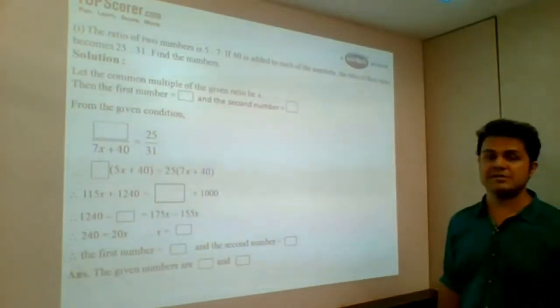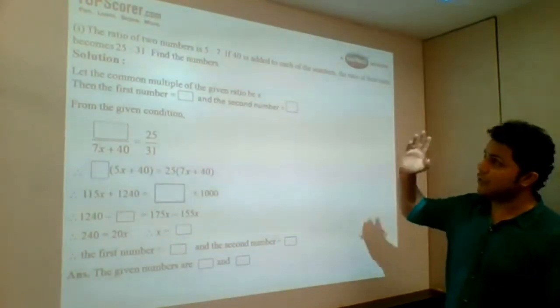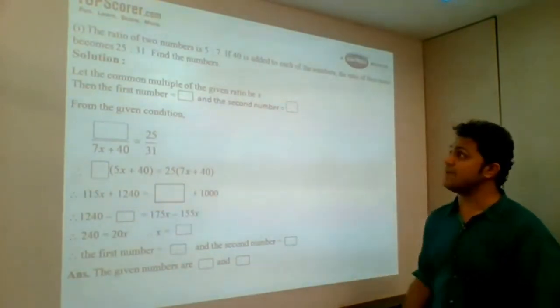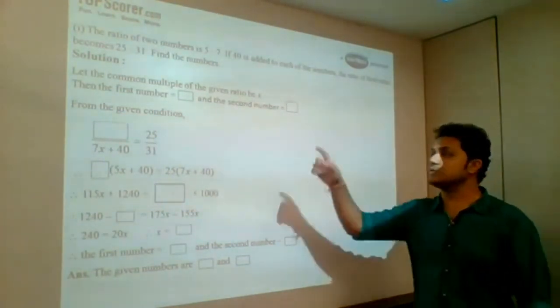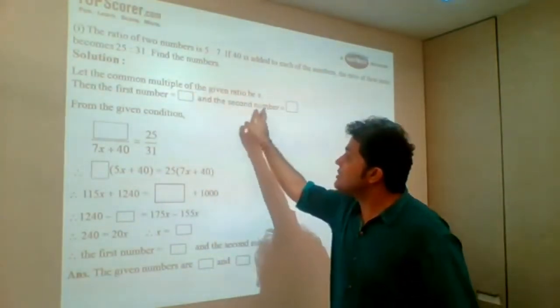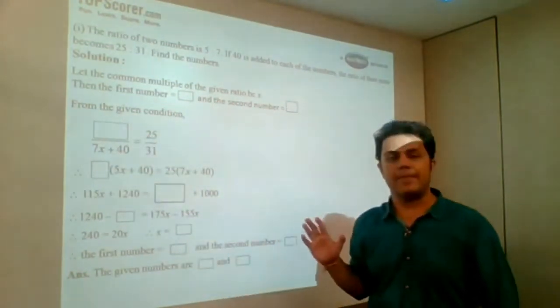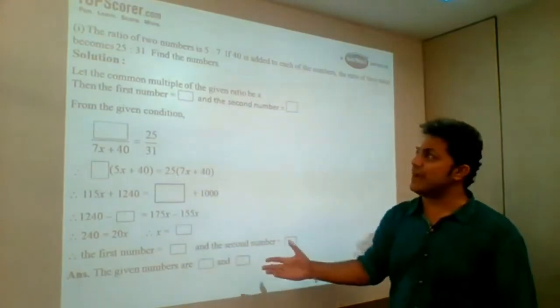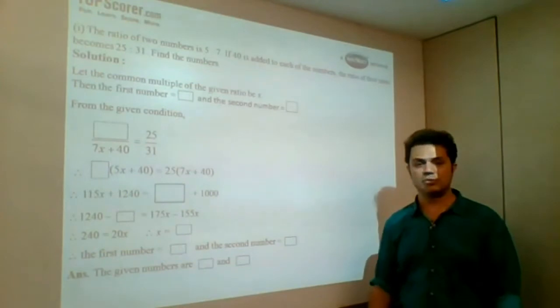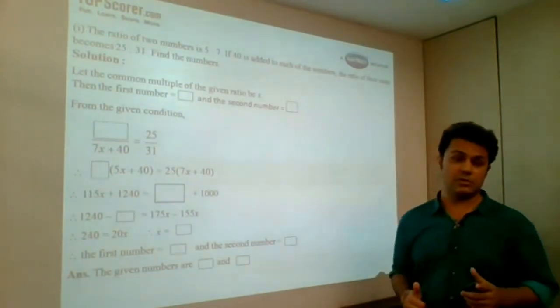Let's understand this. The ratio of the two numbers is 5 to 7. 40 is added to each of the numbers. The ratio of the sums therefore becomes 25 is to 31. Find the numbers. This is the question which I have read for you. You can see in the solution, a lot of things are written and basically you need to fill in the boxes and complete this activity. So a lot of guidelines with respect to the content is given to you.